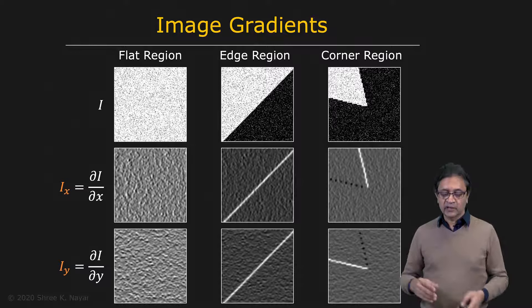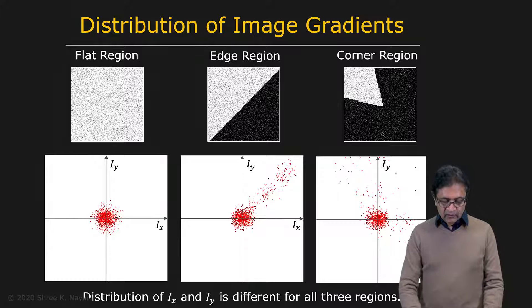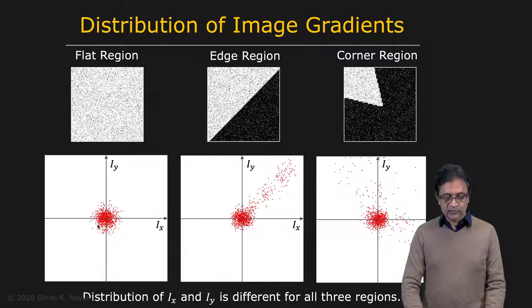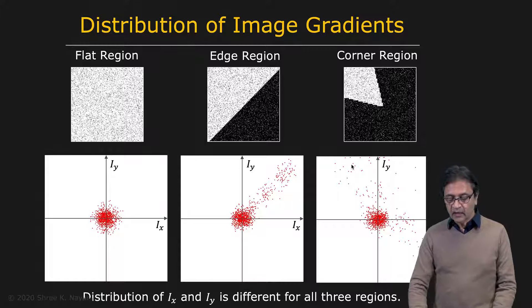We're going to go into gradient space. We define the space Ix, Iy, take all the gradients, and map them to this space. For the flat region, you get a very compact cluster close to the origin, because all the computed gradients are small values. For the edge region, you again get a compact cluster from the flat areas on both sides, but also a very long linear cluster corresponding to the large Ix, Iy values at or close to the edge.